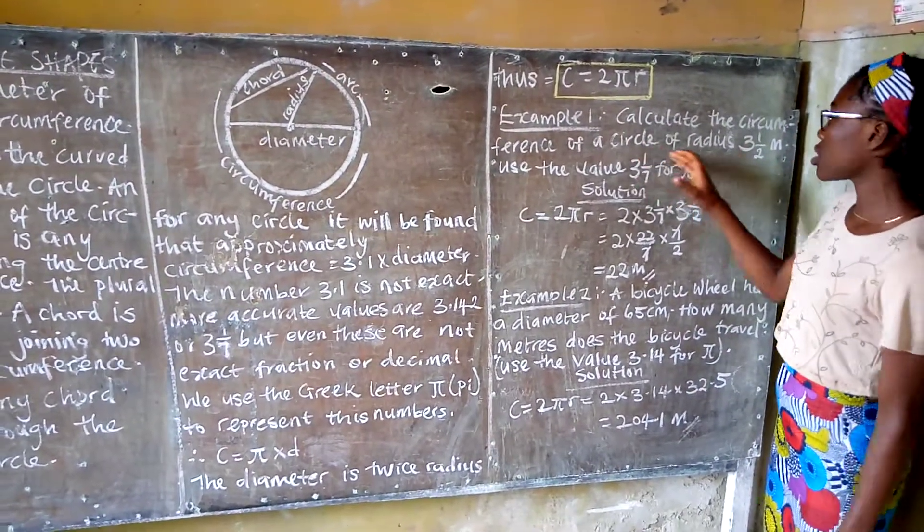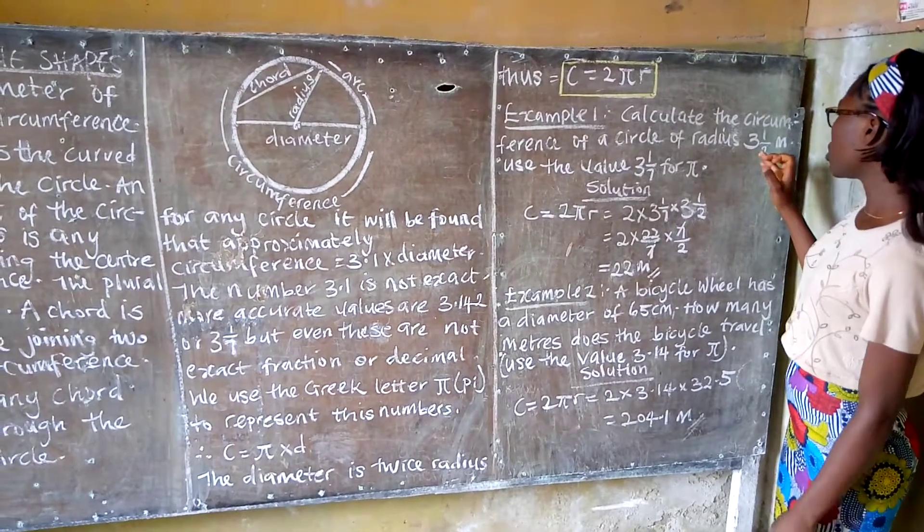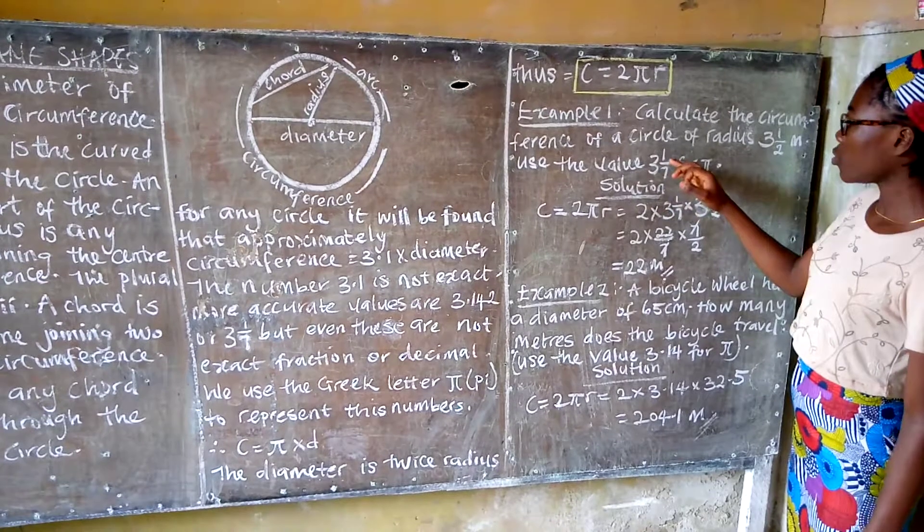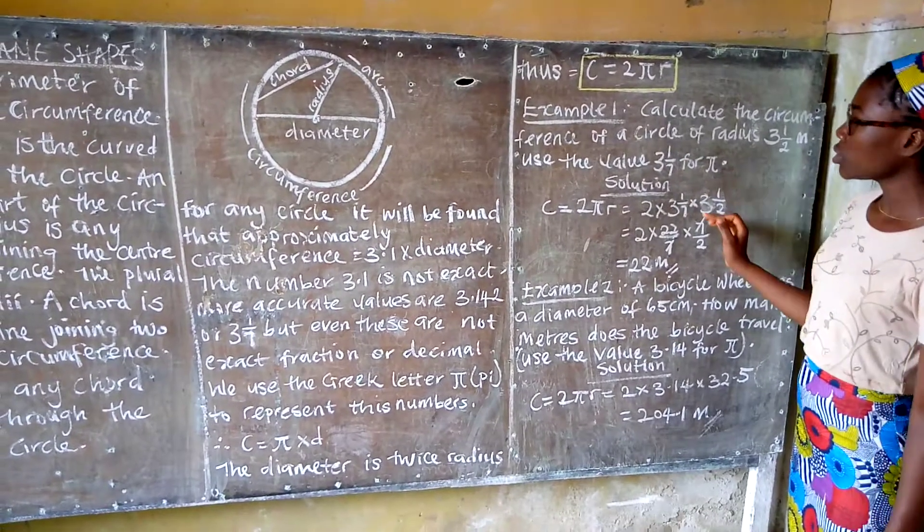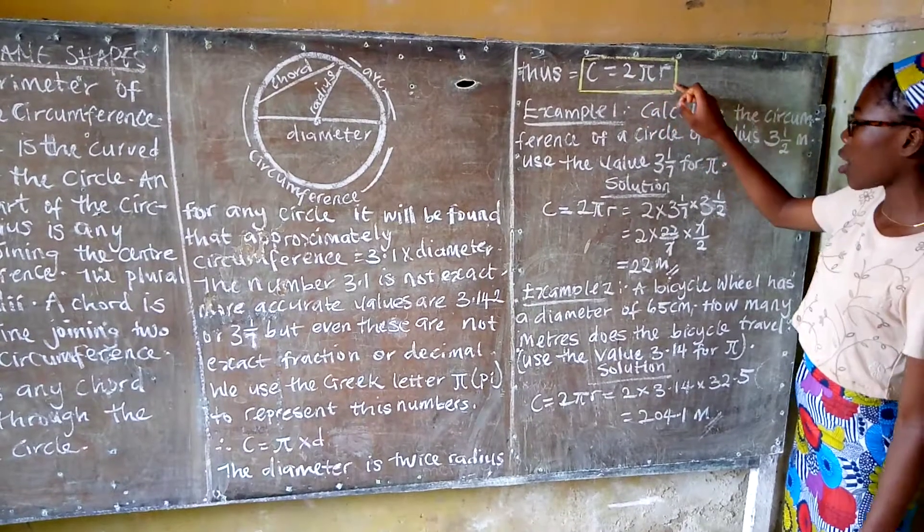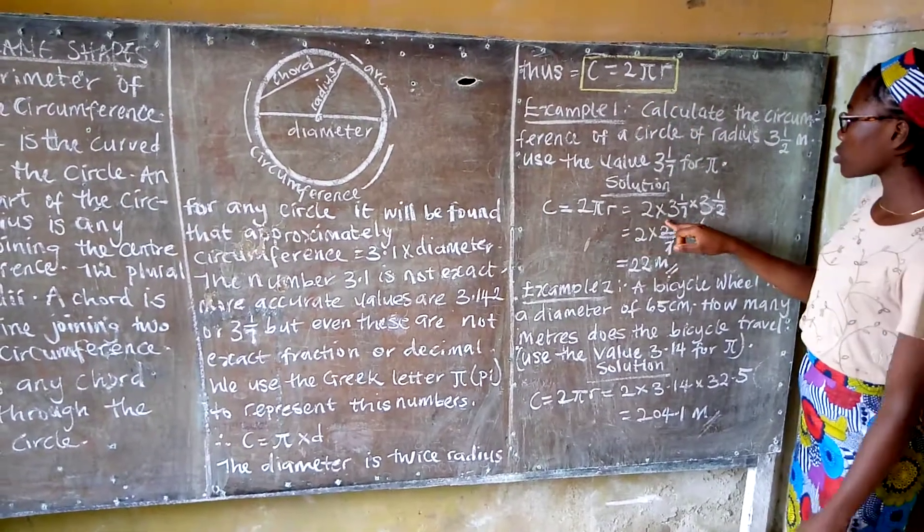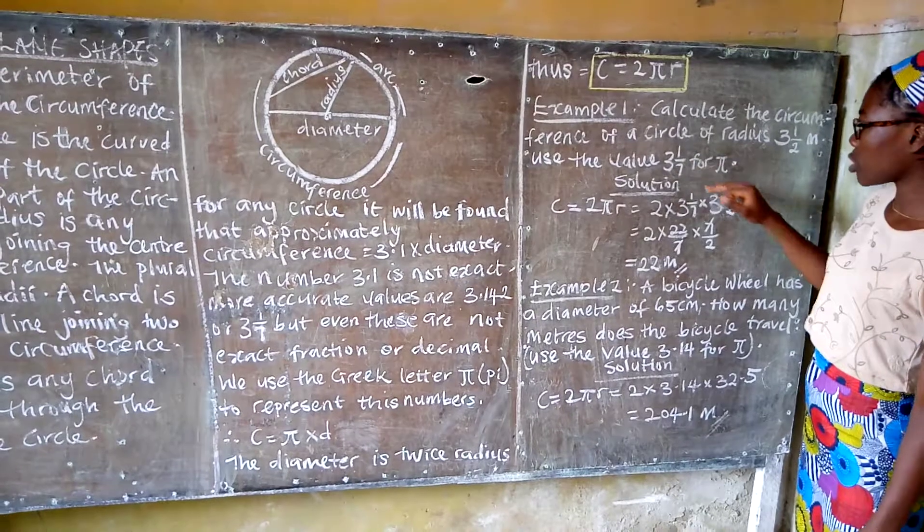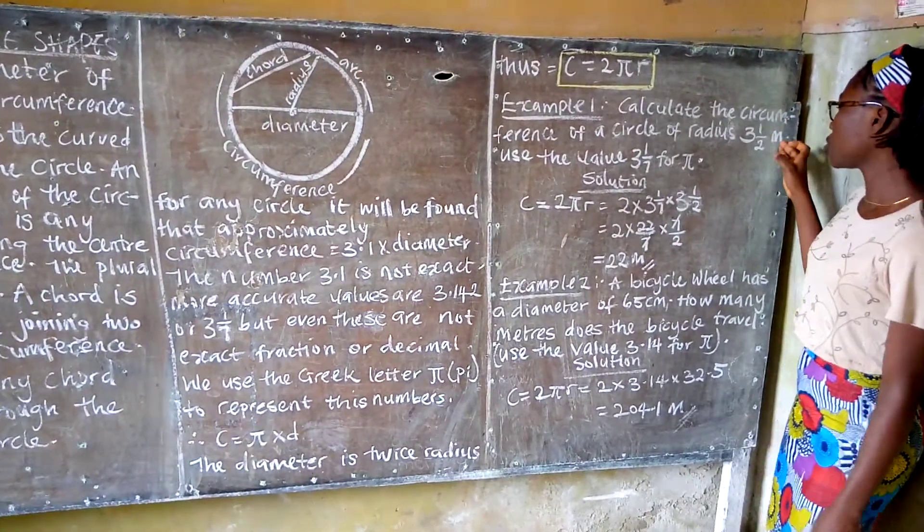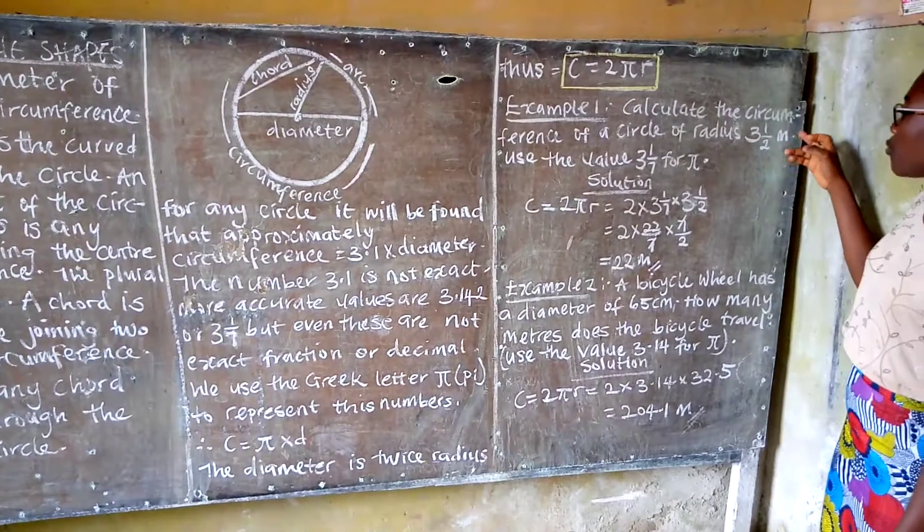Now for example, calculate the circumference of a circle with radius 3½ meters. Use the value 22/7 for π. The formula for calculating circumference is 2πr. So 2 times π, which is 22/7, times the radius 3½.